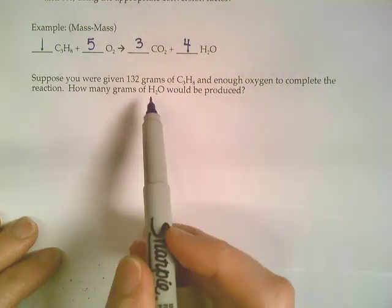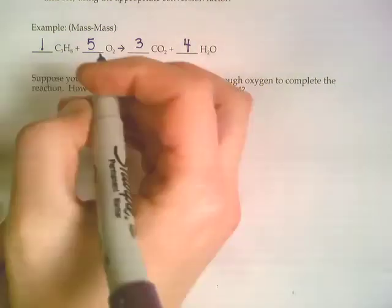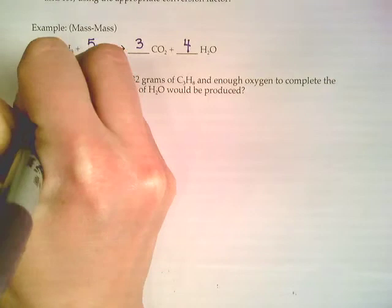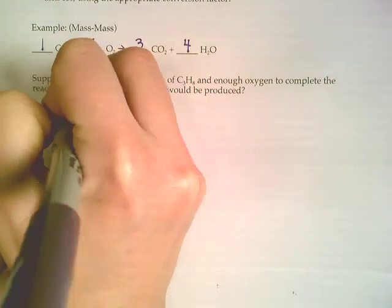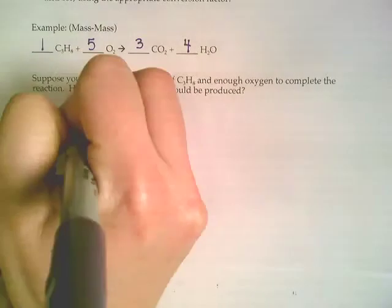So all stoichiometry problems, we're always going to start with our given over the number 1. So we've got 132 grams of C3H8. We're going to put that over the number 1.